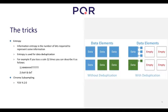The second trick is chroma subsampling. In most video streams they use YUV 4:2:0, which is only a third of the bandwidth compared to 4:4:4.